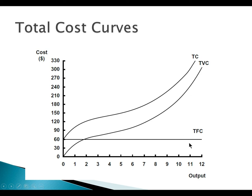We have studied the total cost curves. By increasing the per unit of item produced, total fixed cost remains fixed — it does not change, so the curve has a zero slope. But total variable cost is an increasing function of output: when output increases, total variable cost also increases. When we add total fixed cost to total variable cost, we get total cost.